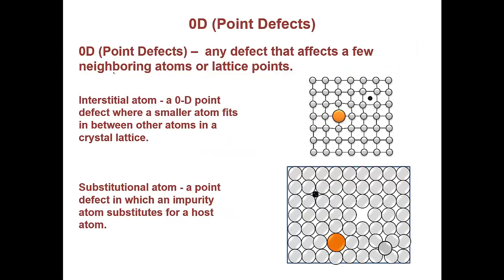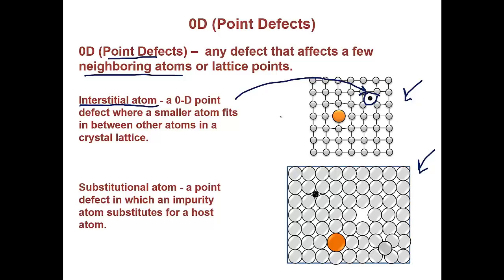Up next, we'll be going over point defects. A point defect is any defect that affects a few neighboring atoms or lattice points. First, we have an interstitial atom, which is a 0D point defect where a smaller atom fits in between other atoms in a crystal lattice. We can see this in both a ball-and-stick model and a space-filling model. The interstitial atom fits in between the normal lattice positions and is squeezed in between the surrounding atoms, introducing a very small stress on the lattice — you can see this plane bulges out a little bit. Every defect has a certain stress field associated with it.